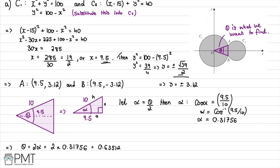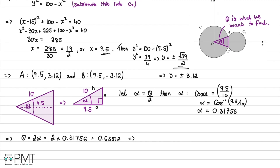The question asks for three significant figures. Therefore, we conclude that the angle AOB equals 0.635 radians, as required.